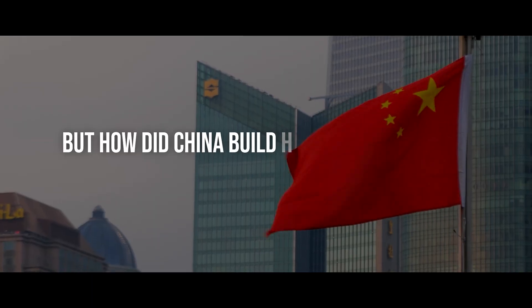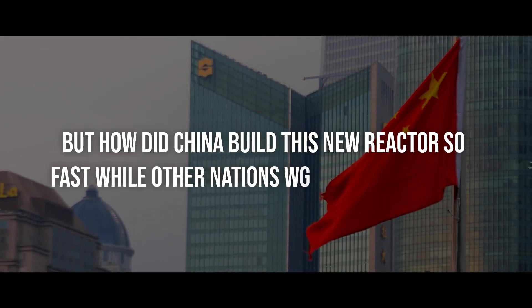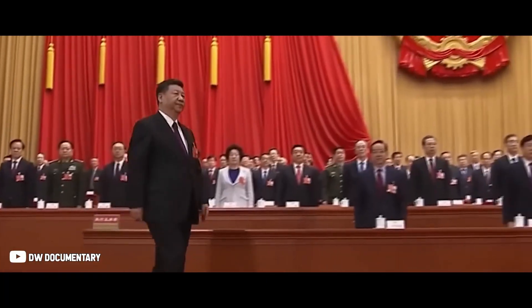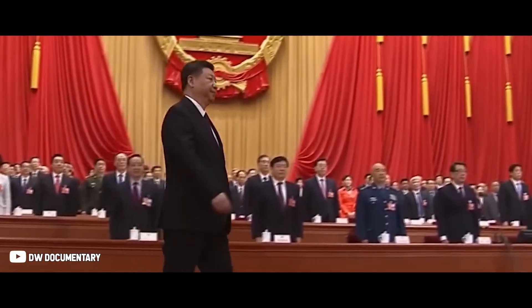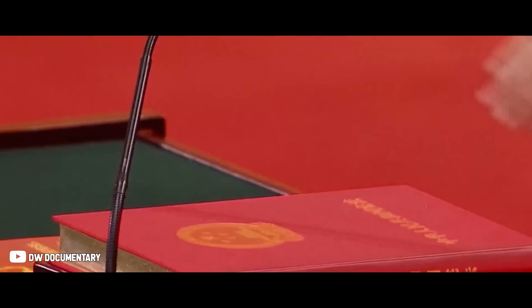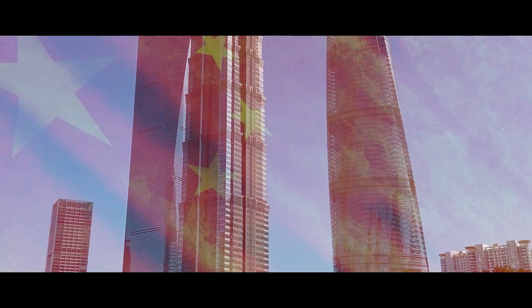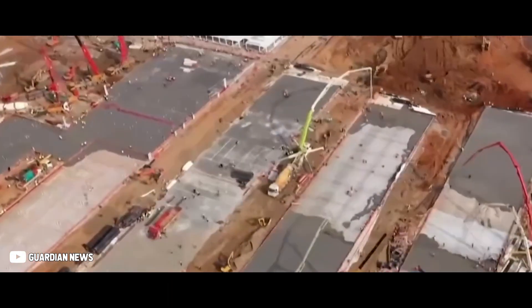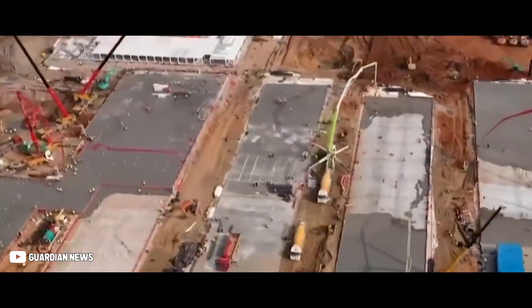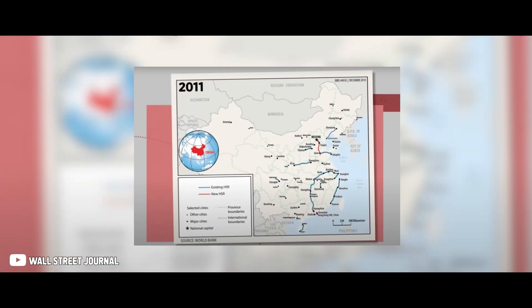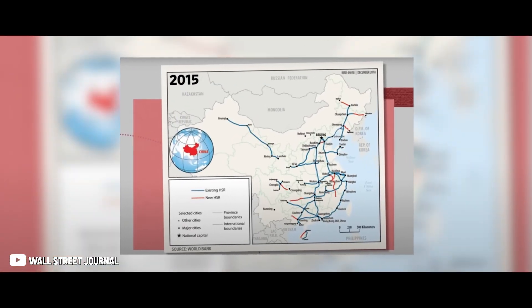But how did China build this reactor so fast while other nations are lagging behind? One reason is that China's one-party governance allows long-term planning and fast decision-making. Being a one-party system, China can streamline its investments in infrastructure without bureaucratic hurdles that would slow down the process.